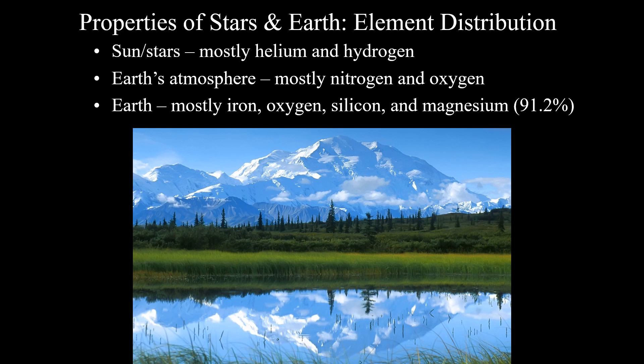The properties of our sun and earth are relatively simple when we think about elemental distribution. Our sun and most stars are predominantly helium and hydrogen — they are fusing elements all the way up to iron, but still predominantly helium and hydrogen. Earth's atmosphere is predominantly nitrogen and oxygen. And the earth itself is over 90 percent made out of four elements: iron, oxygen, silicon, and magnesium. So it's really seven elements — helium, hydrogen, nitrogen, oxygen, iron, silicon, and magnesium — that create the vast majority of the stuff we see in our own star, our atmosphere, and the earth itself, which provides all of our resources and raw materials.